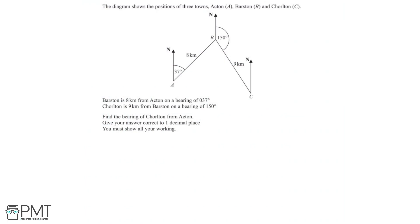In this question we're given a diagram which shows the positions of three towns: Acton, Barston and Cholton. We're told that Barston is 8km from Acton on a bearing of 37 degrees, and Cholton is 9km from Barston on a bearing of 150 degrees. We need to find the bearing of Cholton from Acton, giving our answer correct to 1 decimal place.